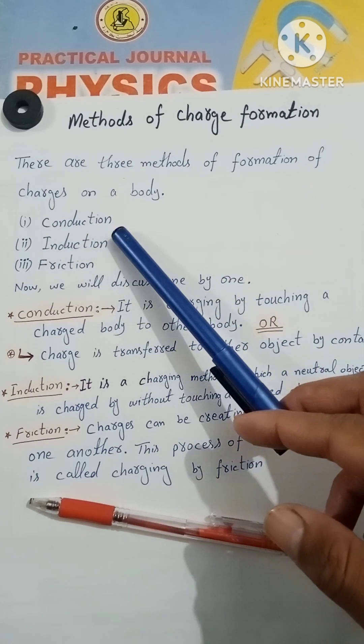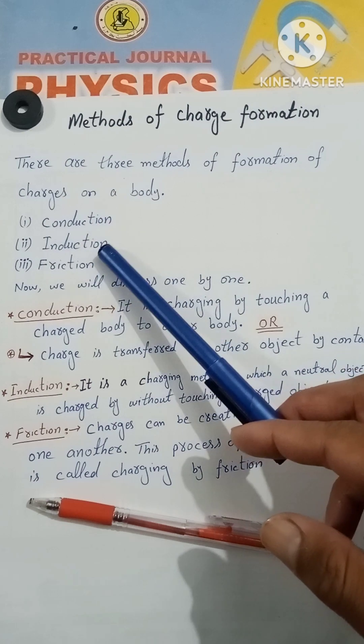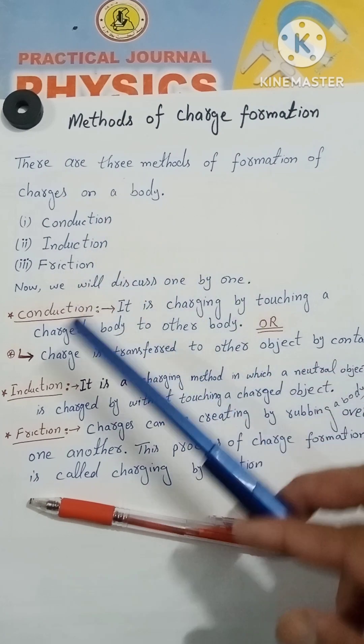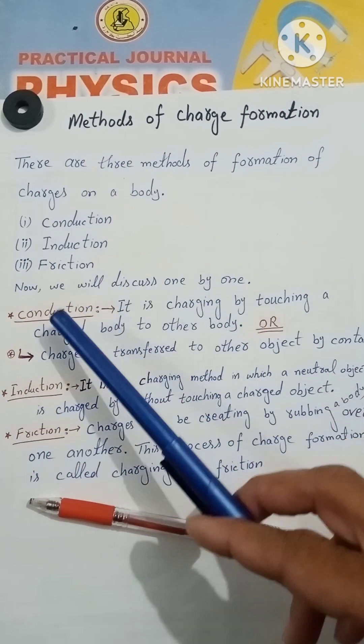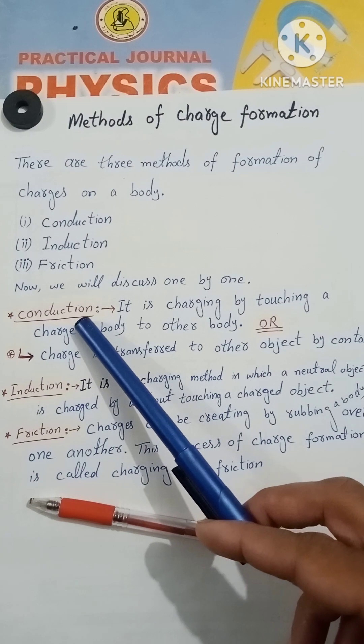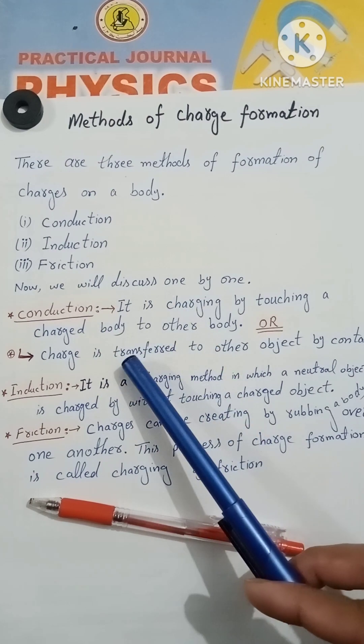There are three methods: conduction, induction, and friction. These are three methods to create a static charge on any body. First, we will define conduction. Conduction is a charging method.